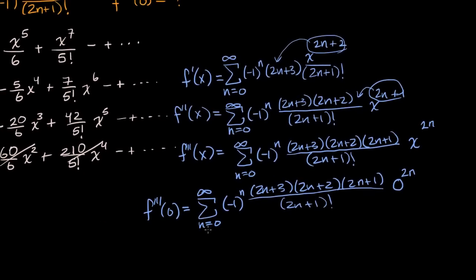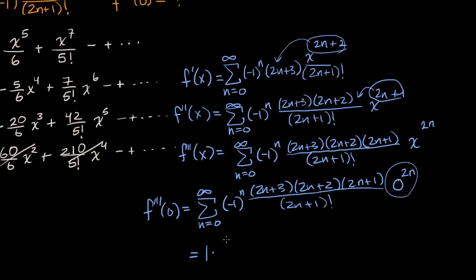The only term that matters is when n equals zero. For n equals one, two, three, and so on, the zero to the two n factor dominates and zeroes everything out. So this reduces to the first term: negative one to the zero is one, times three times two times one over one factorial, times zero to the zero which is one. That gives six.